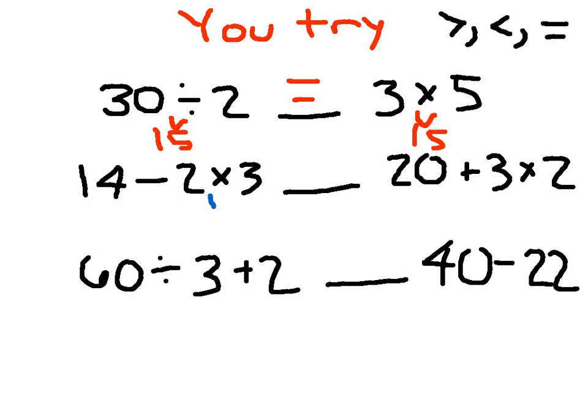14 minus 2 times 3. 2 times 3 is 6. You had to do the multiplication first. And then 14 minus 6 is 8. So we're comparing 8 with 20 plus 3 times 2. And in this case here, 20 plus 6 evaluates to 26. So you better put in a less than sign there. Did you evaluate this correct to 8?